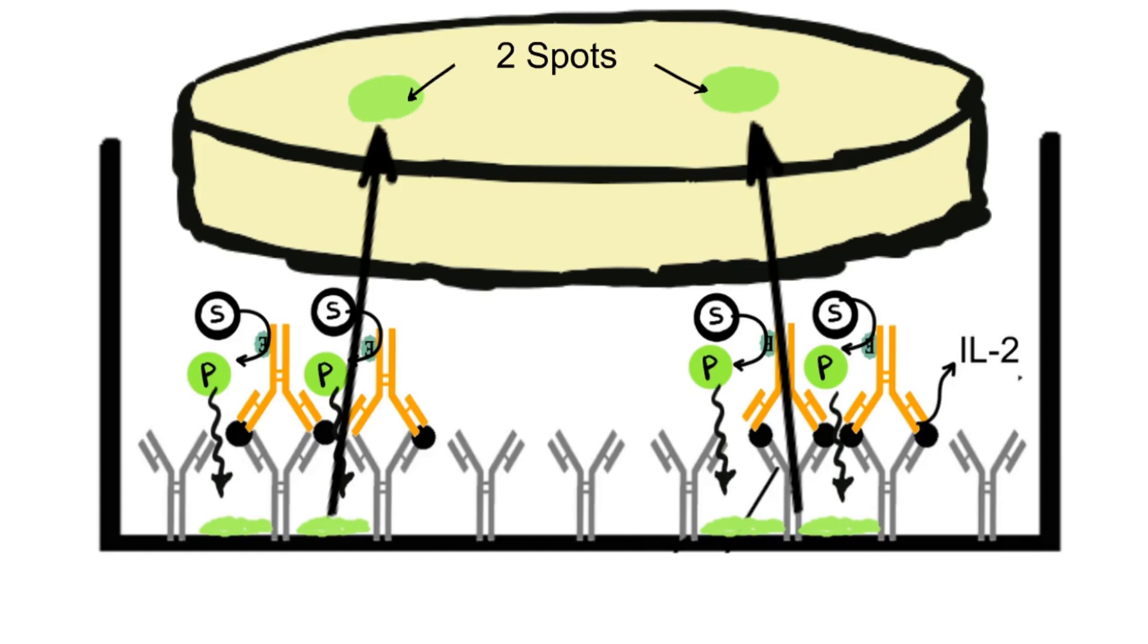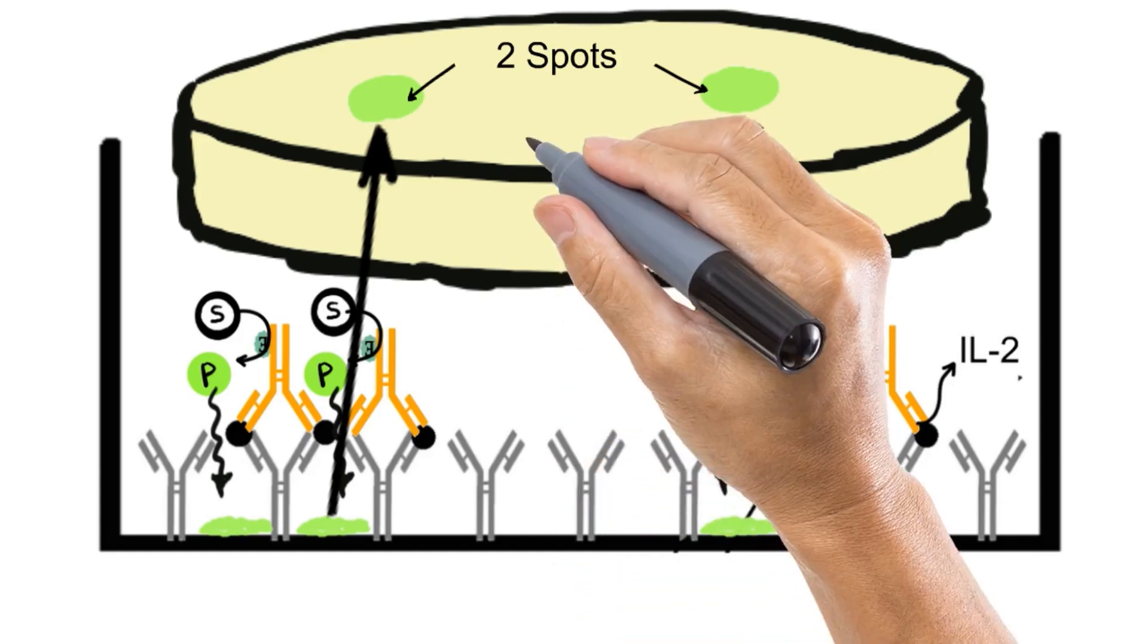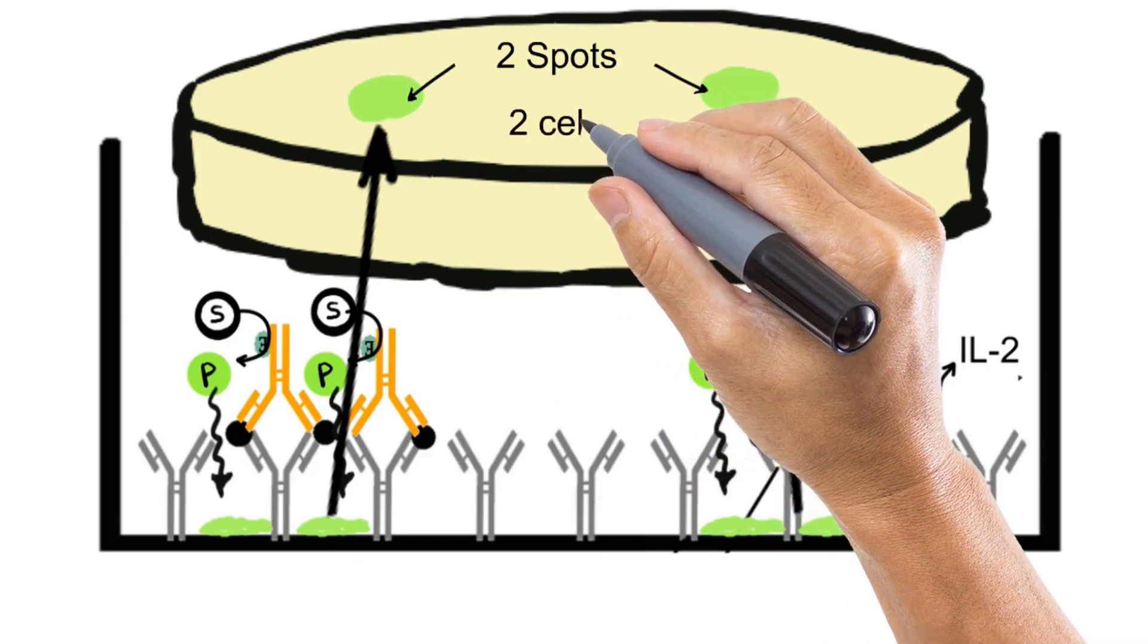So in short, we have to just count the number of spots developed in the well, which are equal to number of antigen producing cells in the sample. And that's what we are seeing.